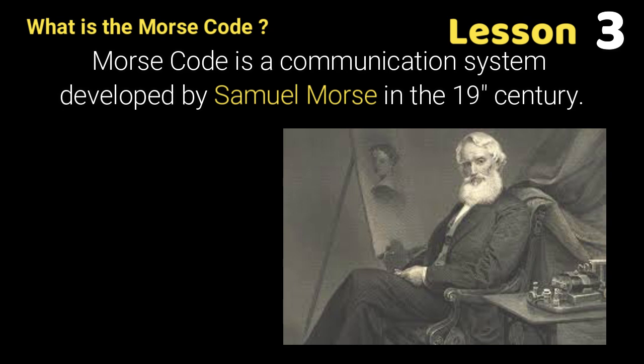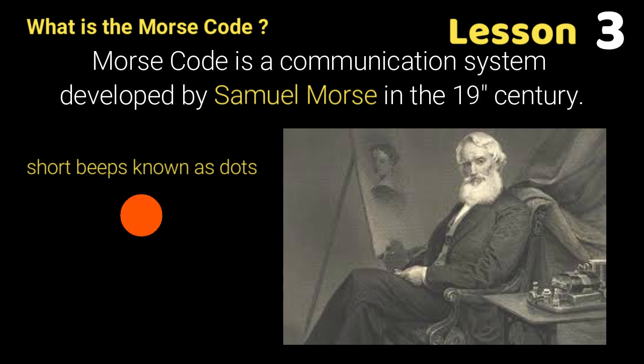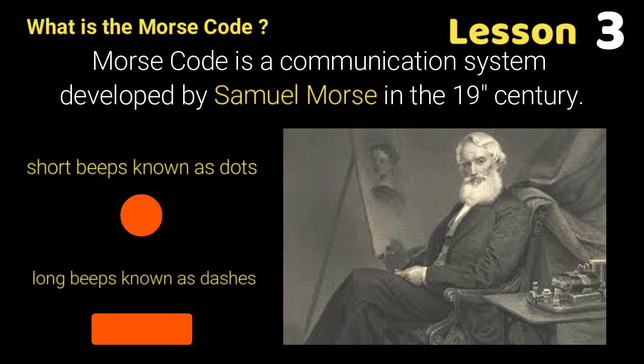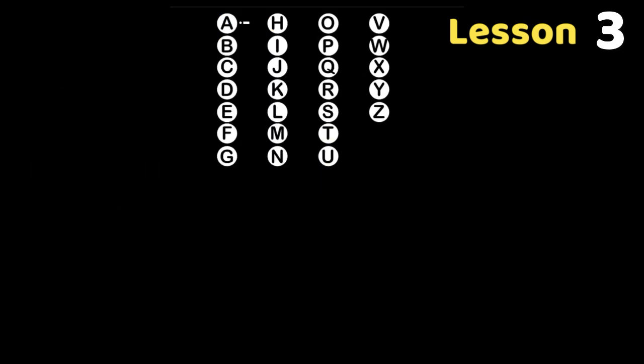Morse code is a simple code that consists of short beeps known as dots and long beeps known as dashes. Different combinations of dashes and dots represent different letters of the alphabet.